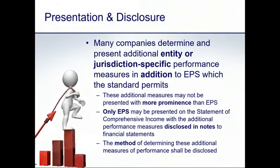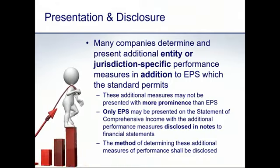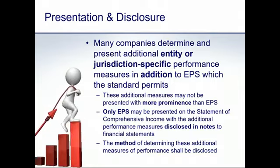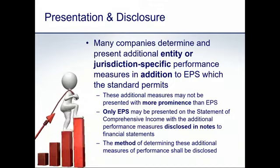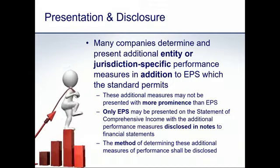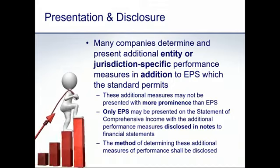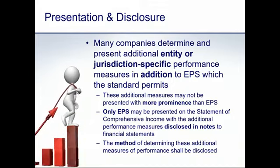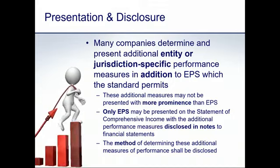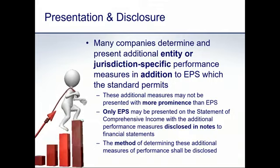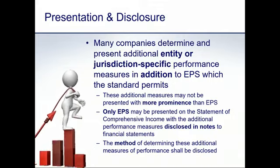Headline EPS is additional to the earnings per share calculation required by IAS 33. It is also very common for listed companies to present other forms of EPS measures not necessarily based on profits — it could be based on operating profits, EBITDA, or any other subtotal in the income statement. IAS 33 allows a company to have as many additional per-share performance measures as it wishes, but none may be presented with more prominence than earnings per share.